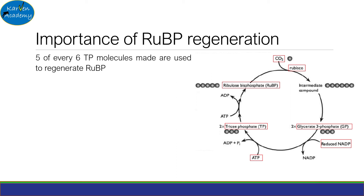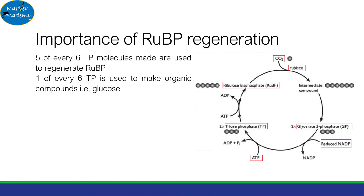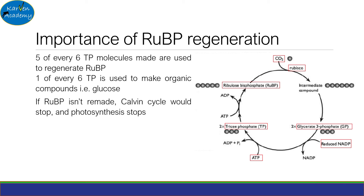Now let's understand the importance of ribulose bisphosphate regeneration. Five of every six triose phosphate molecules made are used to regenerate RuBP, and one of every six triose phosphate is used to make an organic compound — in this case, often glucose. If RuBP isn't remade, the Calvin cycle would stop, and this would also stop photosynthesis.